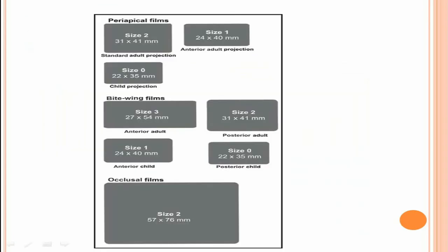These are the various size representations for the x-ray film. This is a size 2 periapical radiograph. This is a size 3 bite-wing radiograph. And this is the occlusal radiograph.